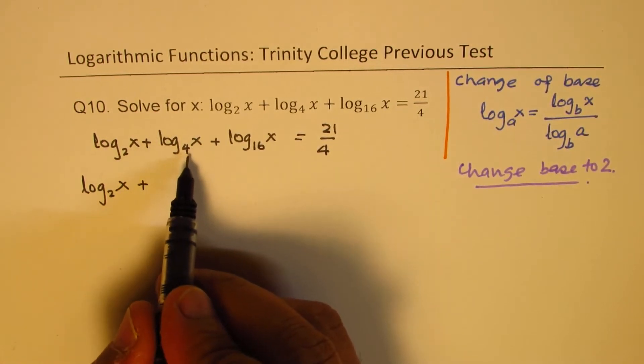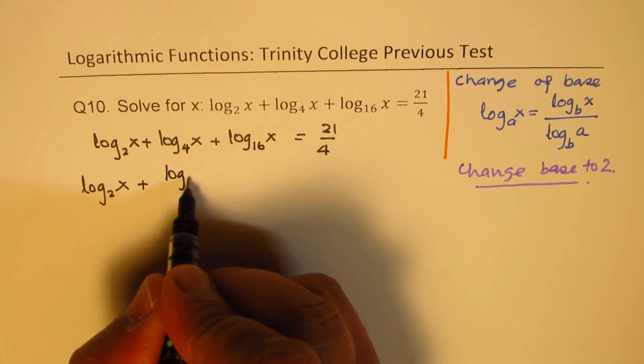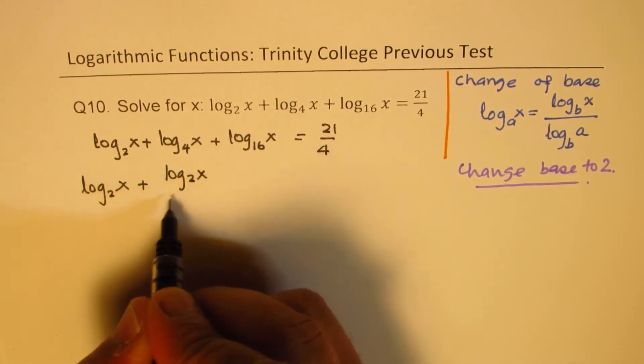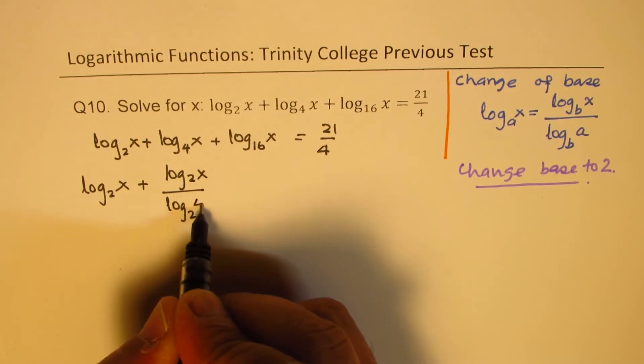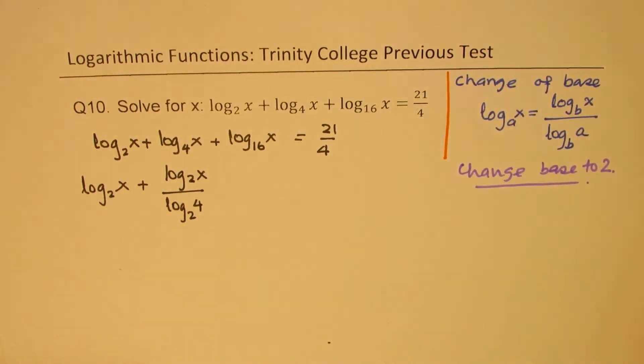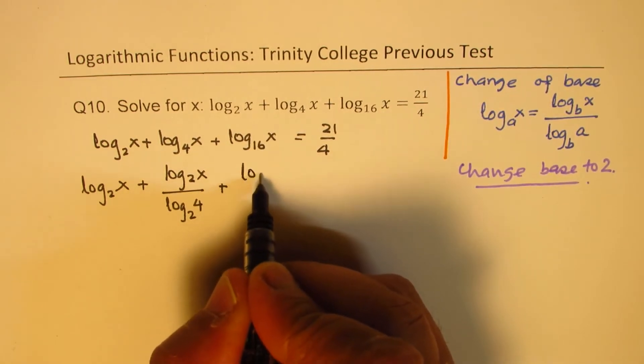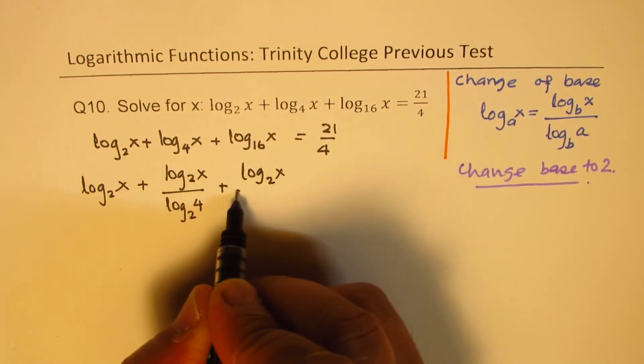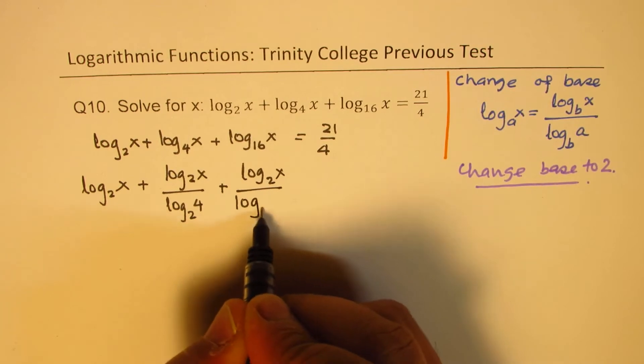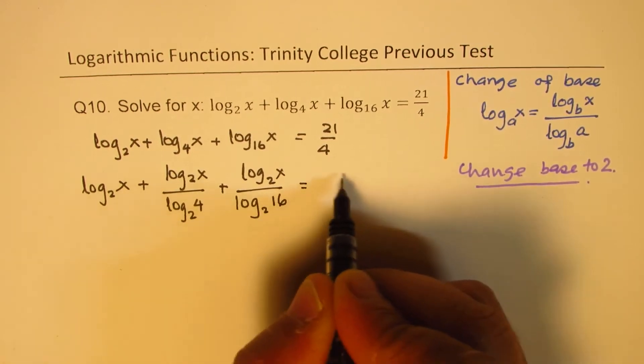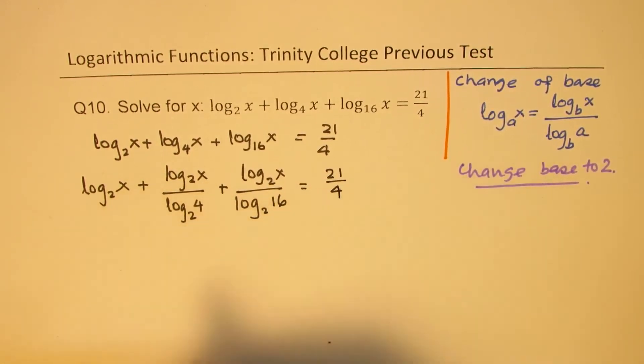Now here for 4, it could be written as log₂(x) divided by log₂(4). So we have used this particular formula. Now log 16, we could write log₂(x) divided by log₂(16). And on the right side we have 21 over 4.